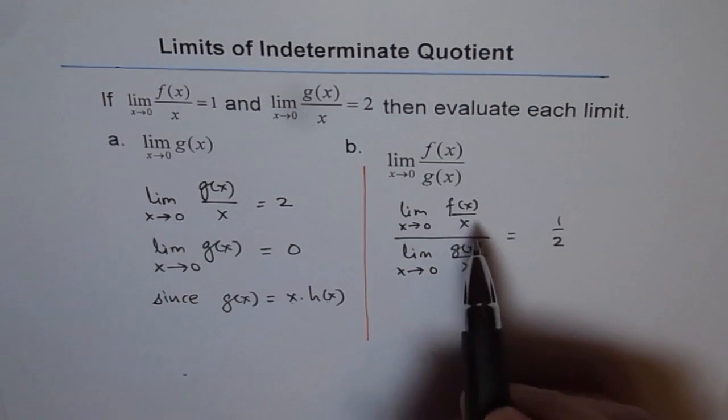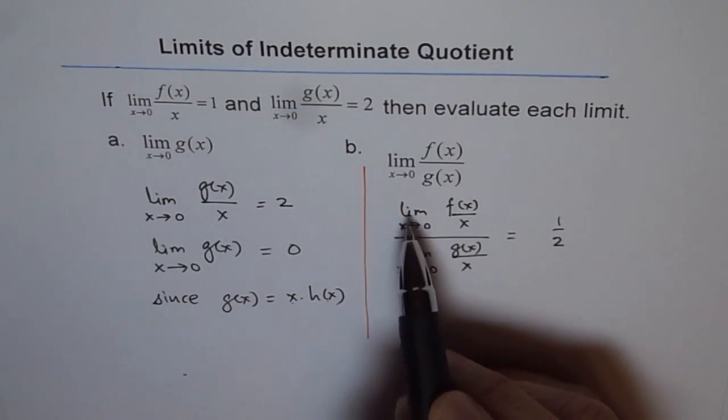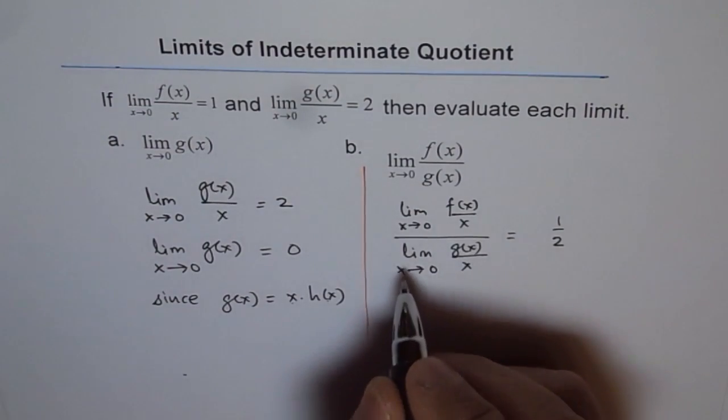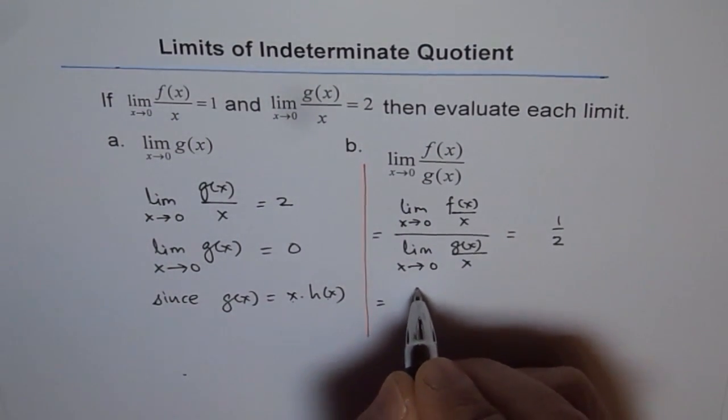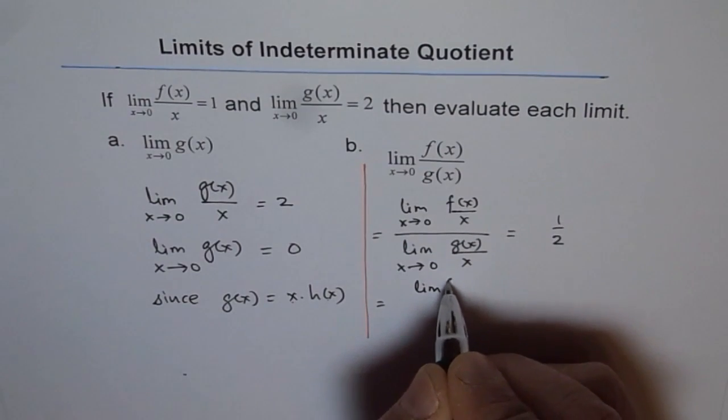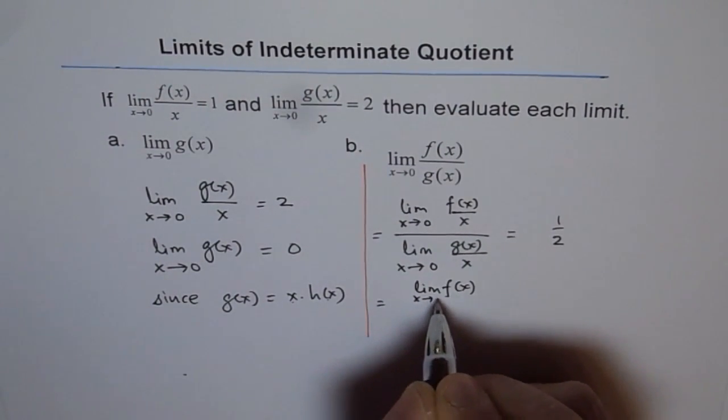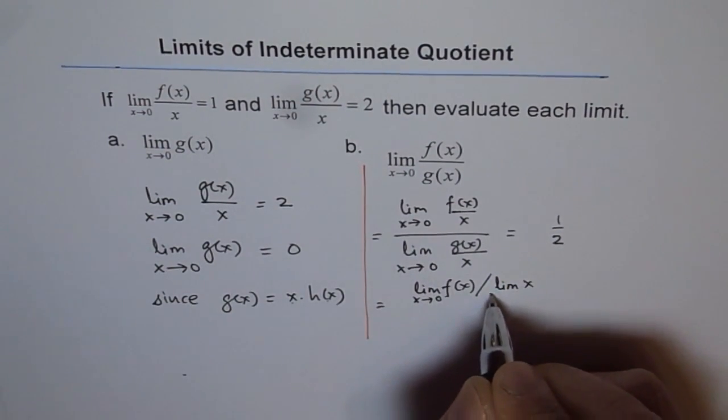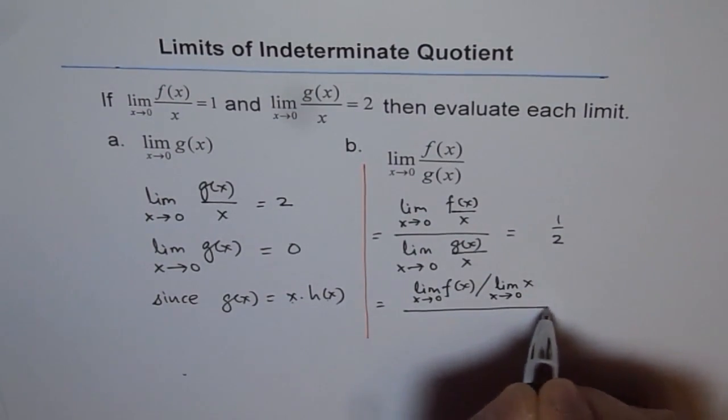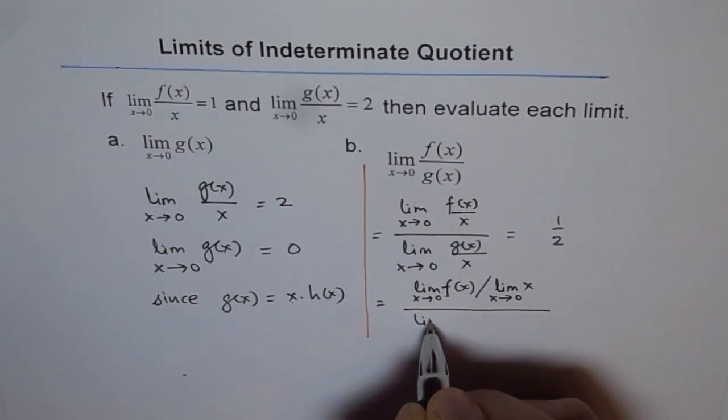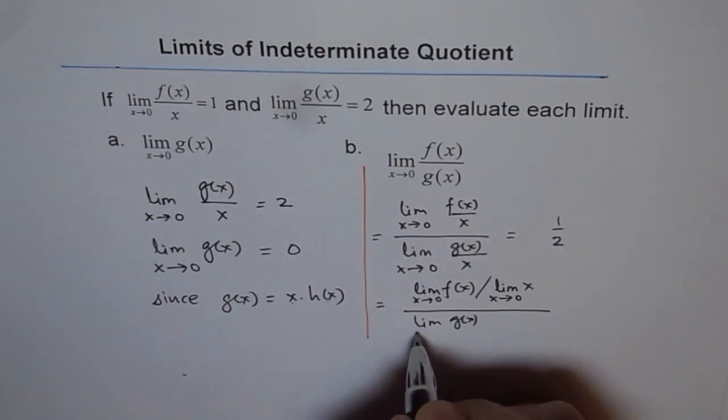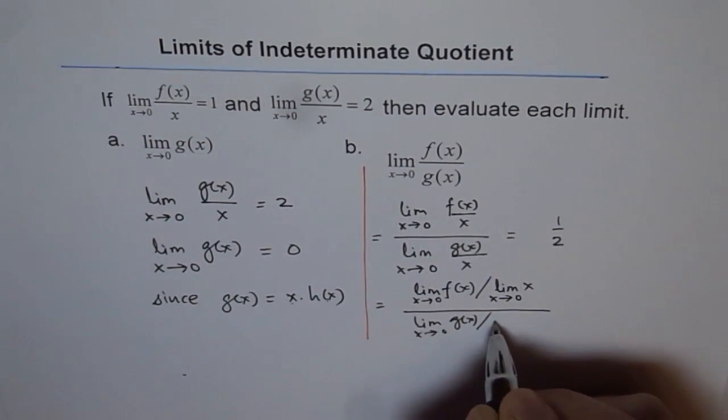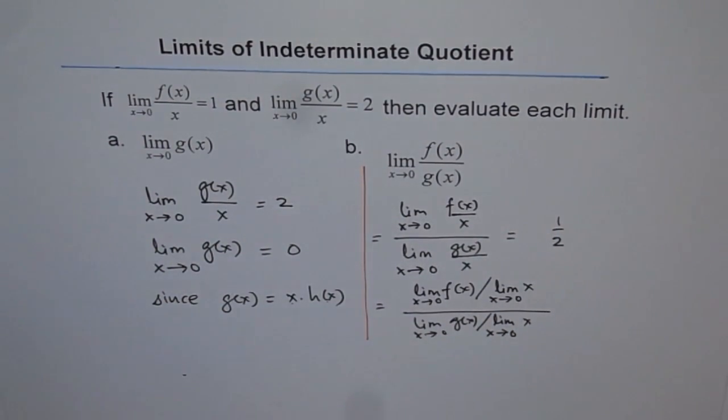Now, as you can see, we can write this as limit of f of x when x approaches 0 divided by limit of x as x approaches 0, and the denominator we can write as limit of g of x when x approaches 0 divided by limit of x when x approaches 0.